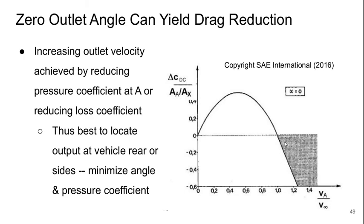So this tells us it's best to locate that outlet at the vehicle rear or at the sides and minimize the angle and the pressure coefficient at the exit location. Because it will allow us to minimize the drag penalty or maybe even get a drag benefit.